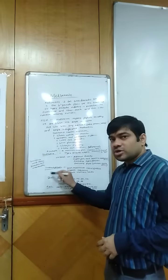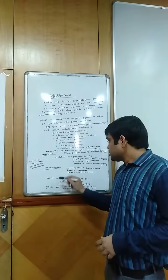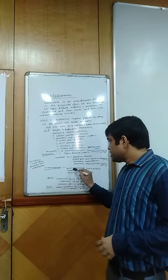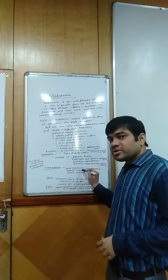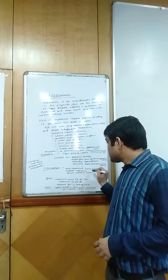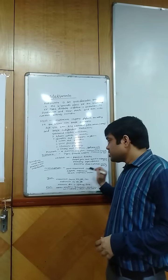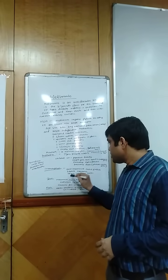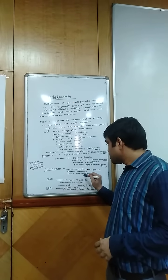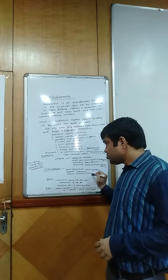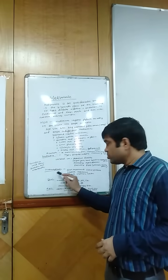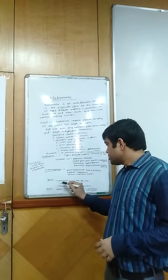Coming to the contraindications, Metformin is contraindicated in renal impairment with eGFR less than 15 ml per minute, hepatic impairment, and chronic respiratory failure.